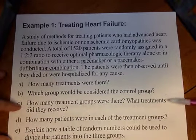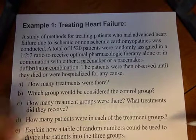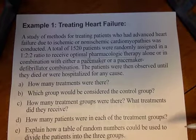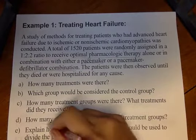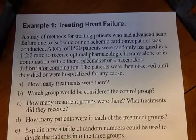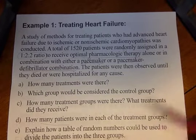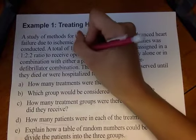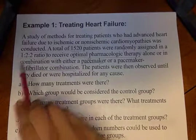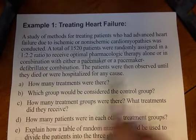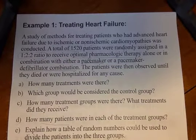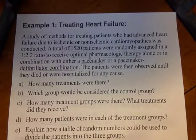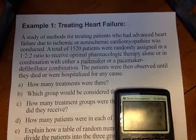Now we have to figure out how many patients were in each treatment group. The key is this one-to-two-to-two ratio. If there were five people in this study — there are actually 1,520 — one would be in the control group, two in the pacemaker group, and two in the pacemaker-defibrillator group. We need to scale that up to 1,520, so I'll divide 1,520 by five, and I get 304.